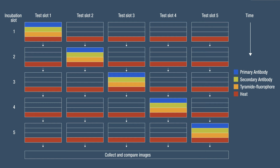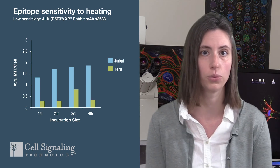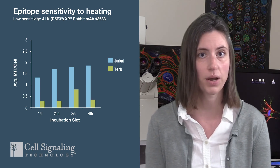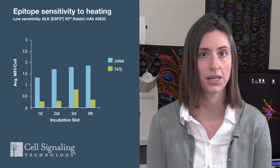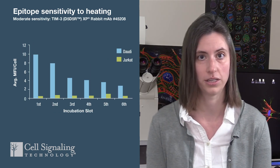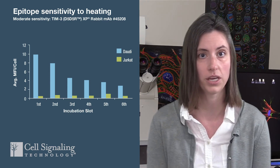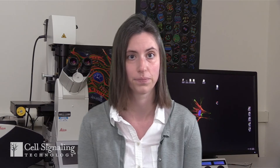So what can you expect to find when testing for sensitivity? First, some epitopes may be more tolerant, exhibiting low sensitivity to heating — antibodies to epitopes in this category may be placed in any order in the panel. Other epitopes demonstrate moderate sensitivity to heating, resulting in a gradual decrease in signal intensity with each additional round of stripping. Some epitopes will exhibit high sensitivity with a quicker loss of signal; these targets should ideally be stained early in your panel.